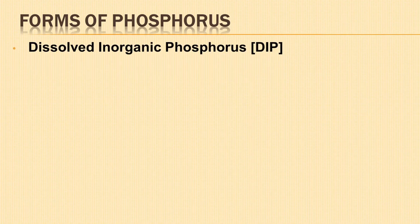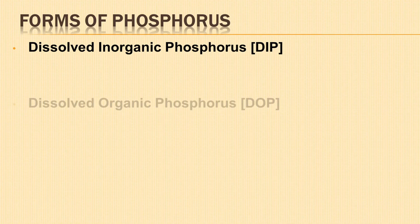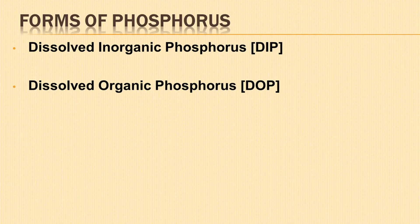Now let us look at the different forms of phosphorus. Dissolved inorganic phosphorus is an essential micronutrient for maintaining growth and metabolism in autotrophs; it consists mainly of readily soluble orthophosphates and polyphosphates. Dissolved organic phosphorus supports primary productivity in ocean ecosystems and consists of DNA, phosphoproteins, and related compounds.